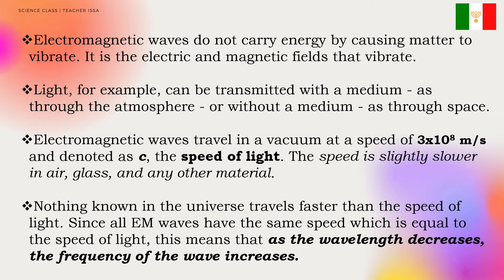For example, light can be transmitted with a medium, such as through the atmosphere, or without a medium, such as through space. Electromagnetic waves travel in a vacuum at a speed of 3 × 10⁸ meters per second, denoted as C, the speed of light.